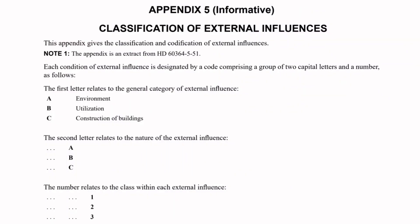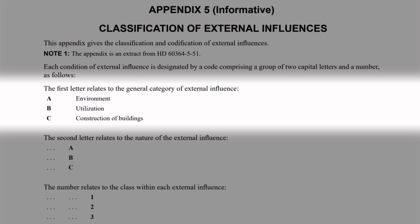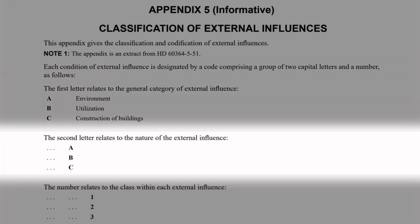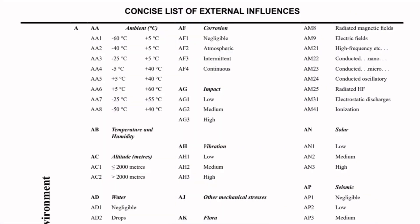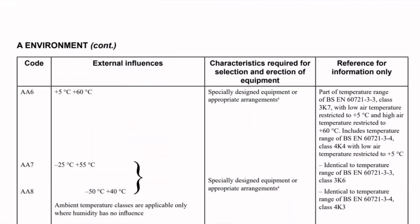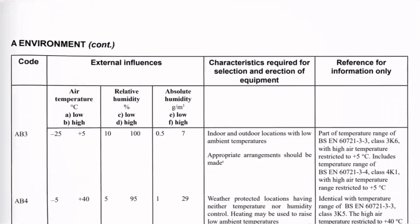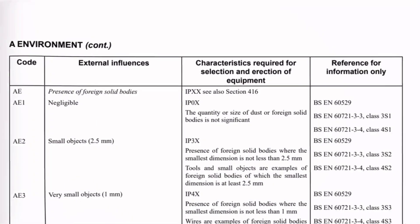Appendix 5 of the regs explains how these codes work. The first letter gives you the general category of external influence, the second letter identifies the nature of the external influence, and then once you get past generalities and into specifics there'll also be a number that relates to the class within the external influence. There's a list in Appendix 5 that shows all the different influences. So to take an example, looking at AA4 you can see it means the electrical installation is likely to experience temperatures between minus 5°C and 40°C and so should be made of materials that can function under those circumstances. Over the next few pages there's information on the characteristics required for selecting and erecting the correct equipment, and references to other standards that apply as well.